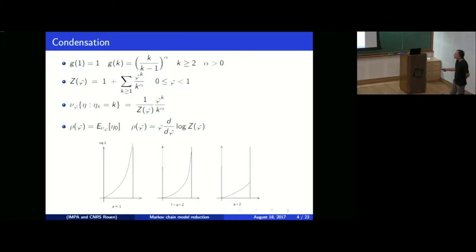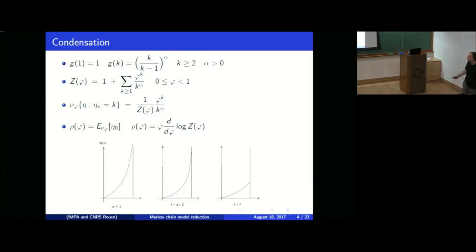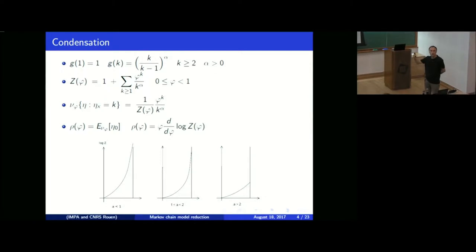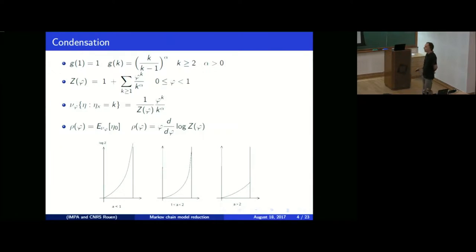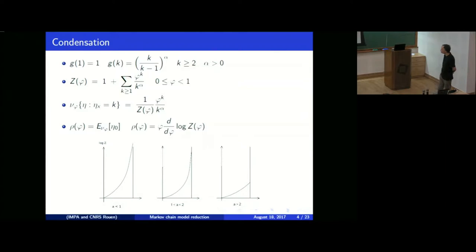I will be interested in one special family in which g(k) is given by k divided by (k-1) to the power alpha, where alpha is a fixed strictly positive parameter. This rate is decreasing to 1 as k goes to infinity. So the more particles you have at one site, the smaller the rate at which they jump. But this asymptotic rate is not converging to zero — it converges to 1, a strictly positive constant.